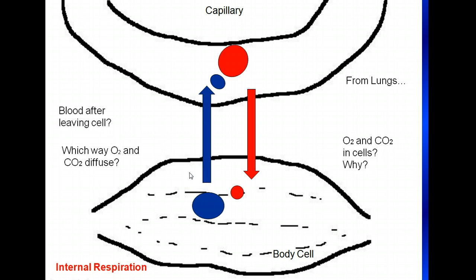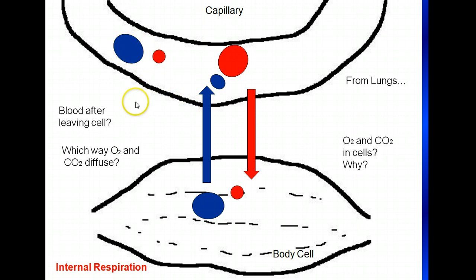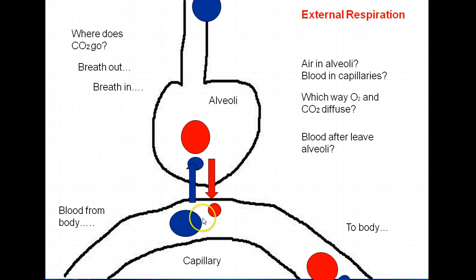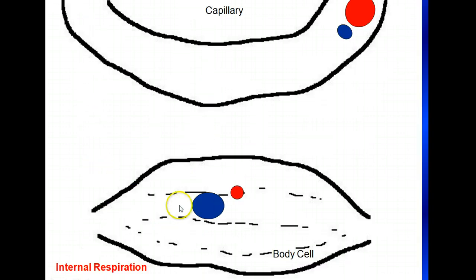So what does the blood look like after leaving the cell? It's going to be high in carbon dioxide and low in oxygen, because the oxygen went into the cell and the carbon dioxide came from the cell into the blood. This blood will then travel to the right side of the heart and then go back to the lungs. Coming from the body through the right side of the heart, it goes up to the alveoli, the CO2 diffuses into the alveoli, and you breathe it out.